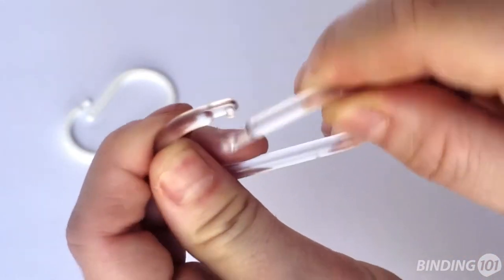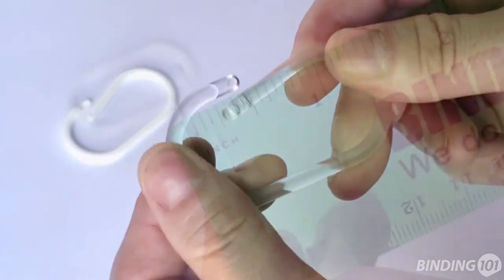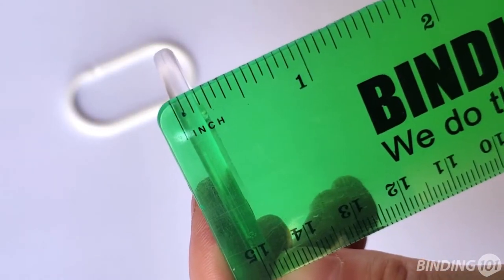These oval binding rings are made of a semi-flexible plastic that is also durable, measuring about 3/16ths of an inch thick.